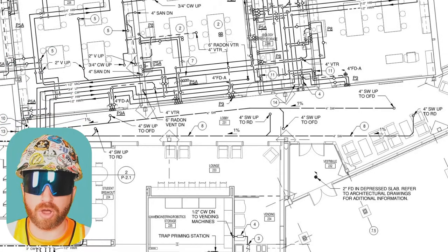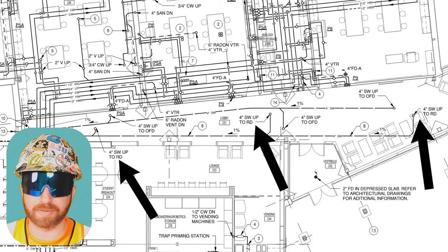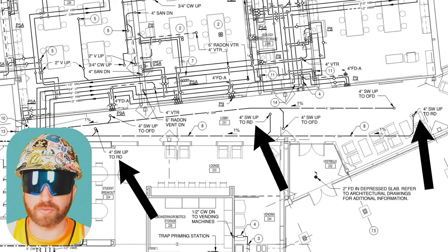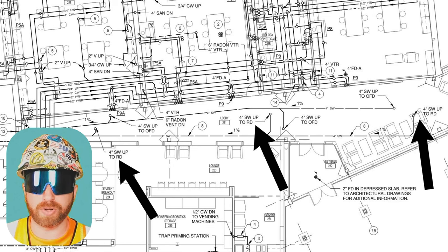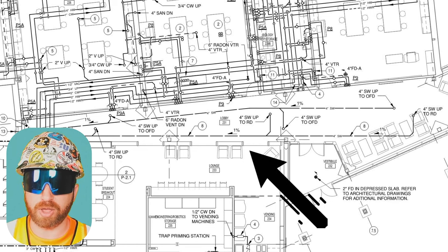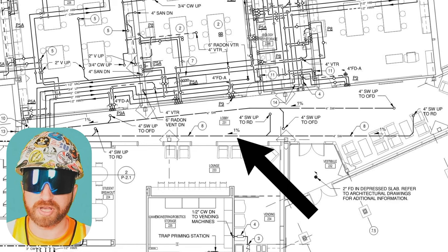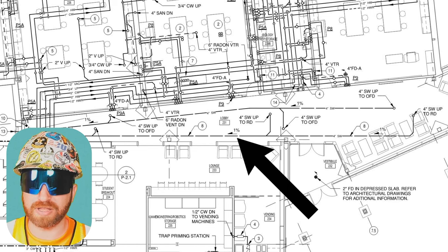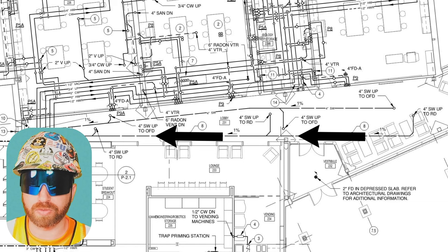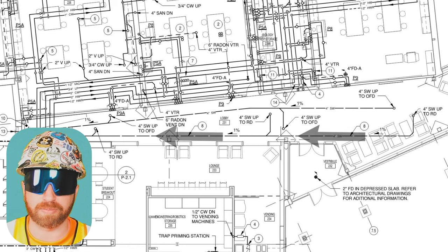To finish up reviewing this drawing page, let's take a look at this last item: four inch SW up to RD. We know the pipe size is four inches; we know SW stands for stormwater; we know this pipe turns up and goes to an RD, which stands for a roof drain. Moving down this stormwater pipe, we see a note for one percent, which tells us the pitch of the pipe. Since stormwater comes from the roof and needs to be fed via gravity, there has to be some pitch to carry the stormwater through the entire system and ultimately into our site civil piping.